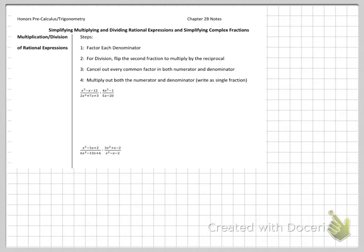For division, you're going to flip the second fraction and multiply by the reciprocal. Then for both of them, you'll cancel out every common factor that's in both the numerator and the denominator, one at a time, partners. And then multiply out the numerator and denominator and write it as a single fraction.